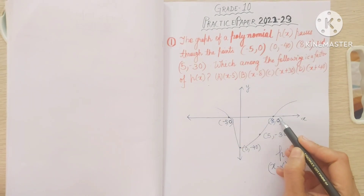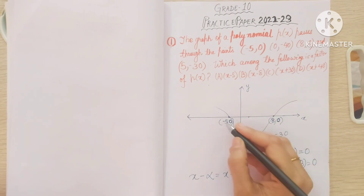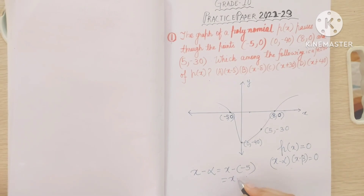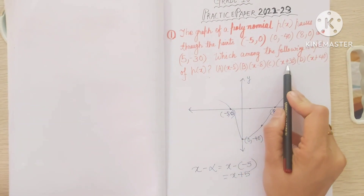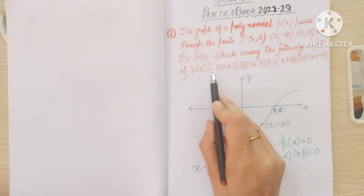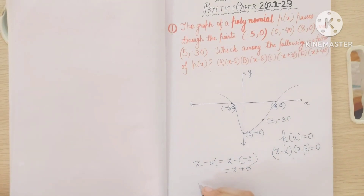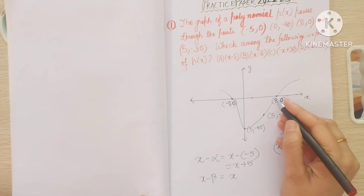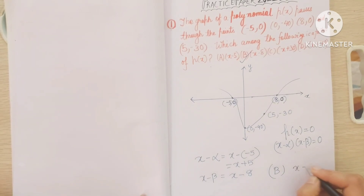Since y equals zero at these points, the factors are x minus alpha. For x equals minus 5, that gives us x minus (minus 5), which is x plus 5. Looking at the options: x minus 5, x minus 8, x plus 30, x plus 40 — option D. None of these include x plus 5 as a direct match, so checking option B, x minus 8 corresponds to the root x equals 8. So question number 1 answer is B, x minus 8.